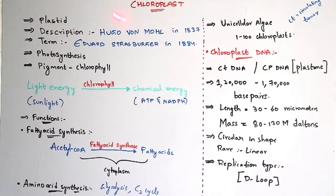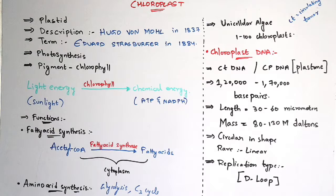The term chloroplast — the name of this chloroplast — was given by Edward Strasburger in 1884. And what is the main function of this chloroplast? Photosynthesis.